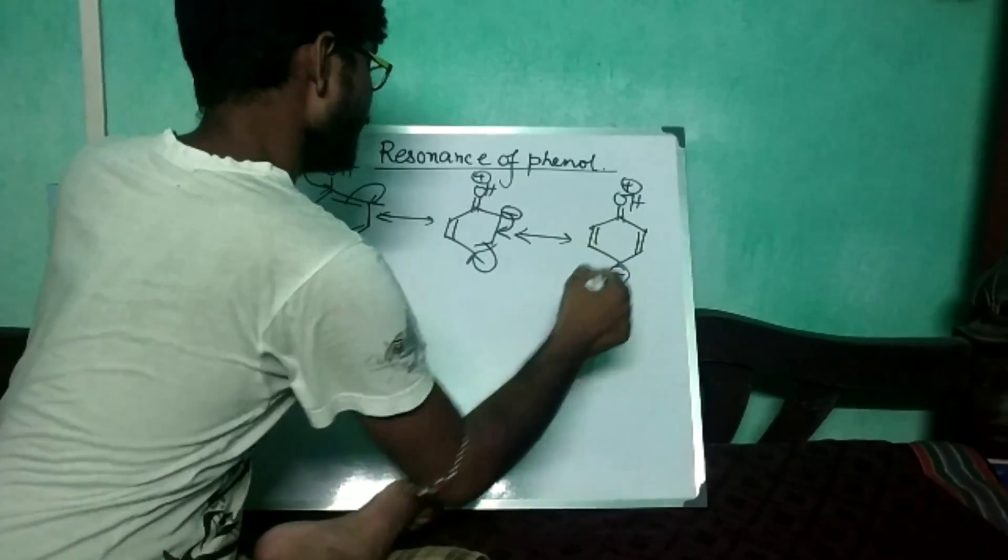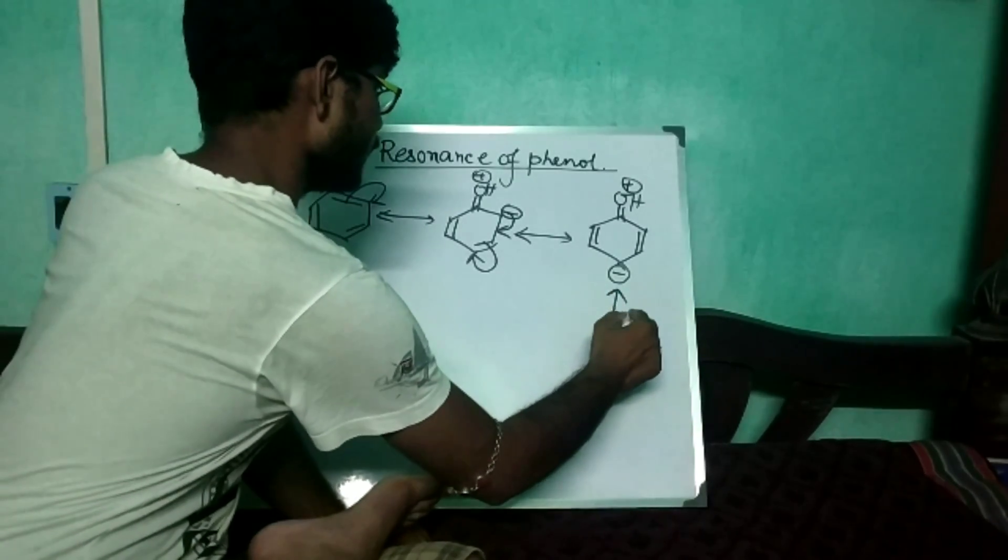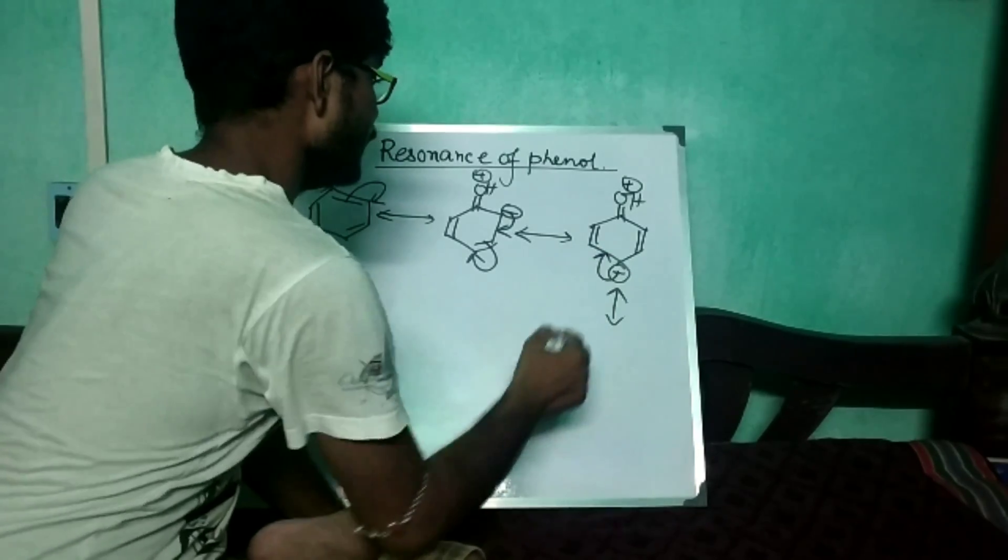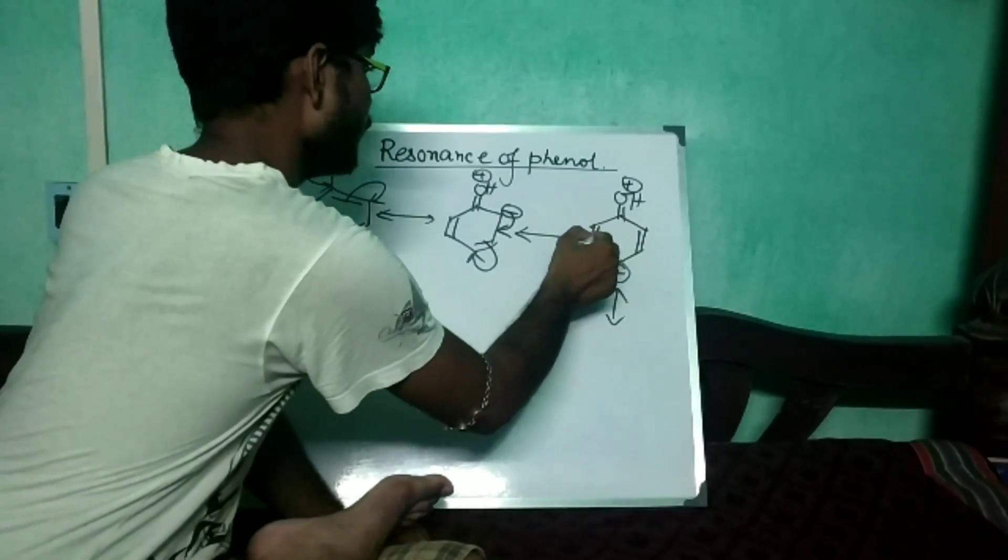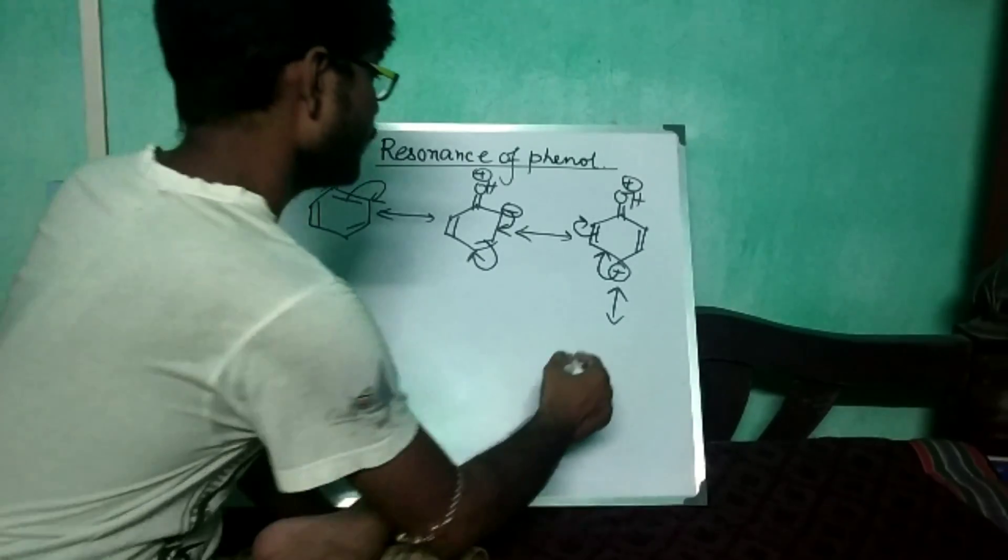That is like that. And in the next step again, the negative charge will make a new bond in this position and this one will be on this carbon atom.